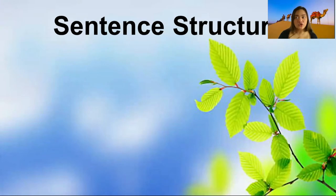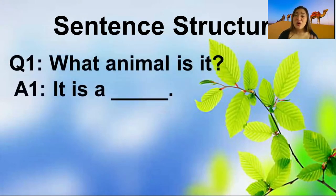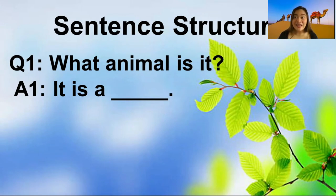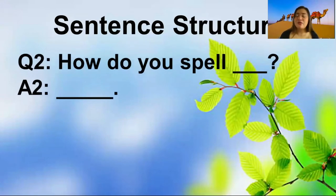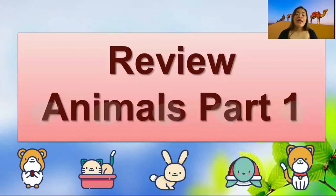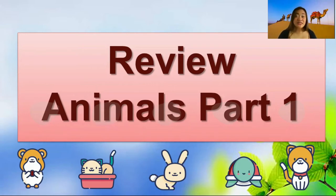Let's start with our sentence structure. The first question is: what animal is it? And then you can answer with 'it is a' and the name of the animal. Our second question is: how do you spell it? We are going to practice your spelling together. Now let's begin the lesson with a review of the first part — animals part one — which are the common animals around us, seen inside or outside our home.